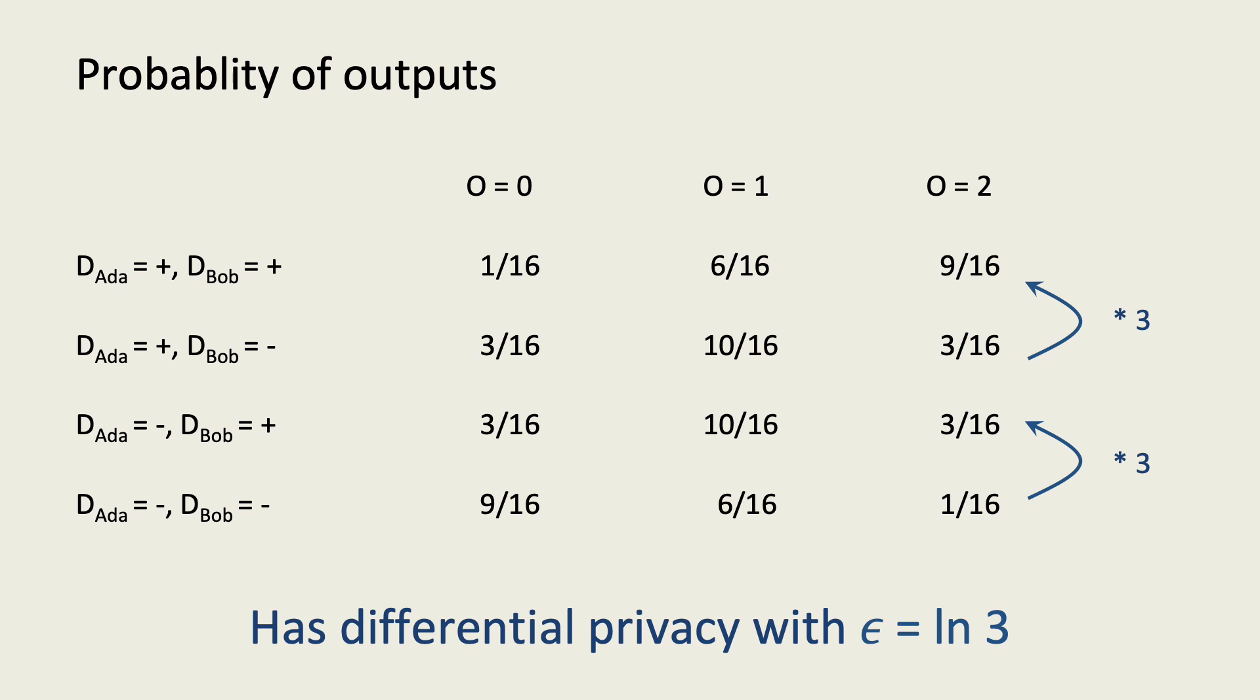Examining these probabilities, we can see that changing any one of the inputs changes the probability of any of the outputs by at most a factor of 3. This means that the algorithm has log 3 differential privacy.